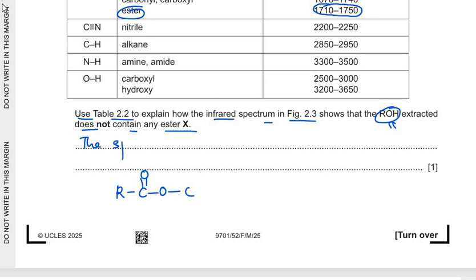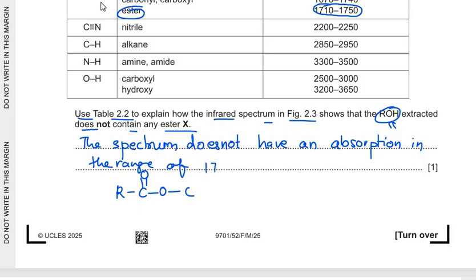It's straight so we can show that the C double bond O is not present. So we can write that the spectrum does not have an absorption in the range of 1710 to 1750 per centimeter. If it's present then the C double bond O is present that shows the ester is present. If only alcohol is there then the C single bond O will be present because the alcohol has a C single bond O. So that would be present but C double bond O absorption should not be present if the ester is not present.